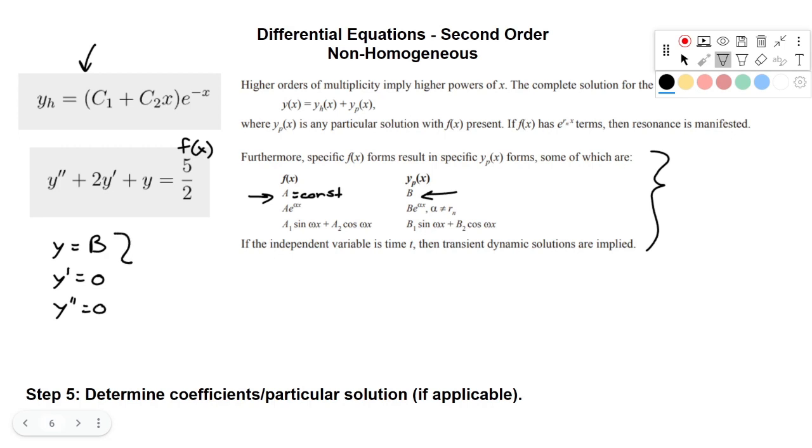So now we can take these values, and we can plug them into our original equation. y double prime plus 2y prime plus y equals 5 over 2. If y double prime is 0, we have 0. If y prime is 0, we end up with 0 there.